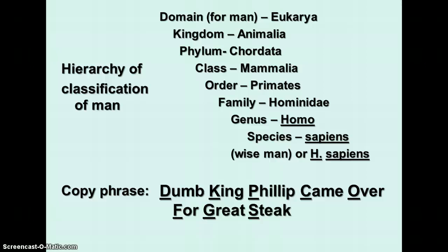For humans, we have domain Eukarya, which means we're eukaryotes. We belong to kingdom Animalia because we are animals, phylum Chordata because we have a backbone and spinal cord, and class Mammalia because we have hair and other characteristics of mammals. Order is Primates, which includes apes, monkeys, and humans. The family we belong to is Hominidae, our genus is Homo, the species is sapiens, and so the scientific name is Homo sapiens, which means wise man.